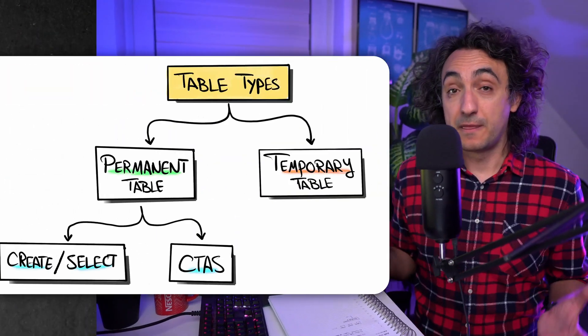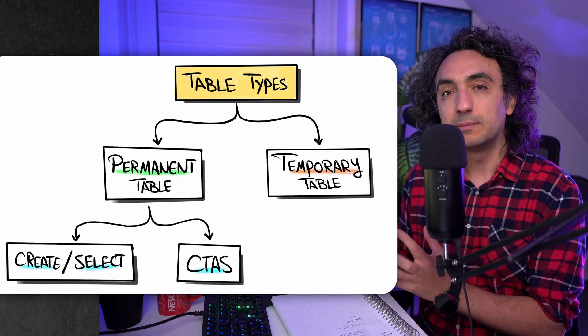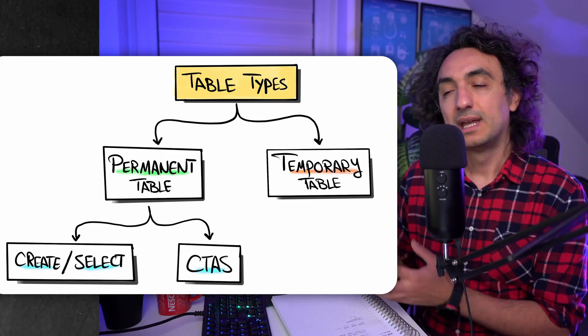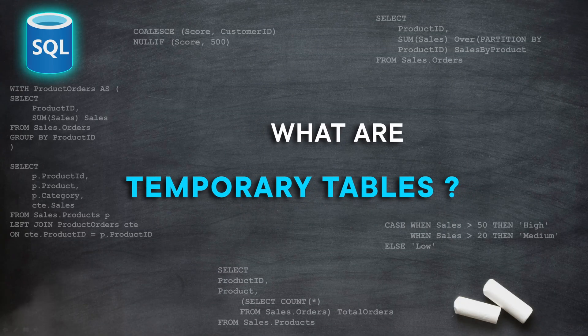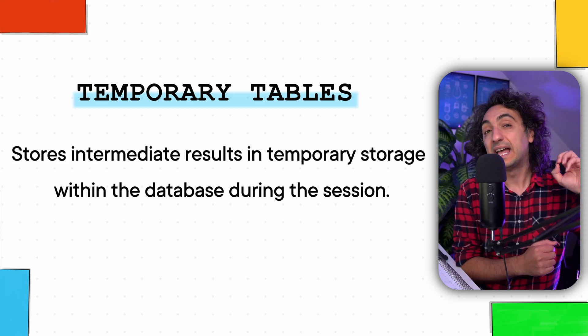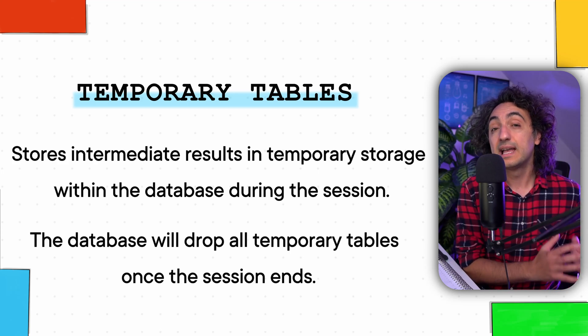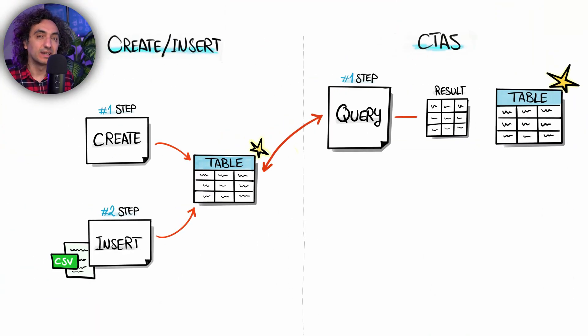We have covered the first type of tables in databases: permanent tables, where you create a table and it lives forever until you drop it. Now we're going to talk about another type — temporary tables. Temporary tables, sometimes called temp tables, store intermediate results in a temporary storage in the database during a session, and the database automatically drops these tables after the session ends.